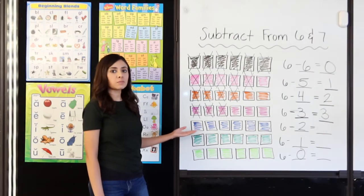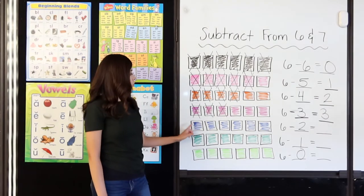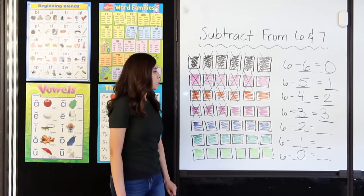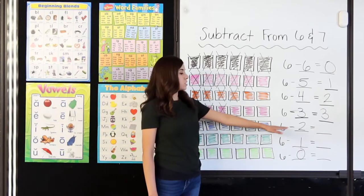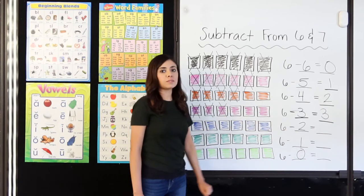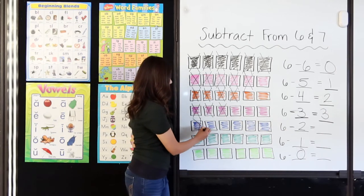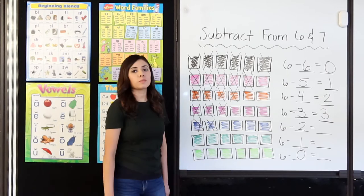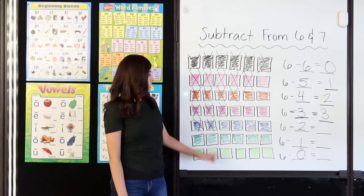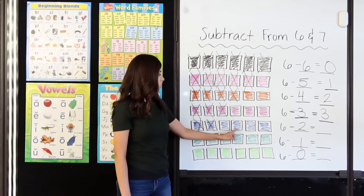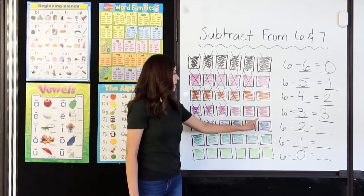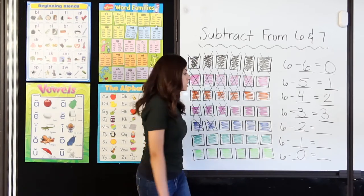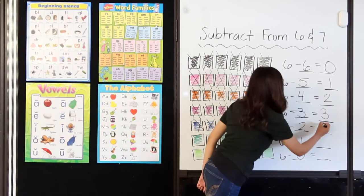Here I have 6 blue squares — 1, 2, 3, 4, 5, 6. I am going to go ahead and cross off the 2 that I am taking away: 1, 2. How many blue squares do I have left? 1, 2, 3, 4. 6 minus 2 equals 4.